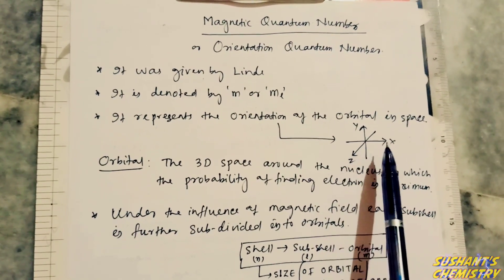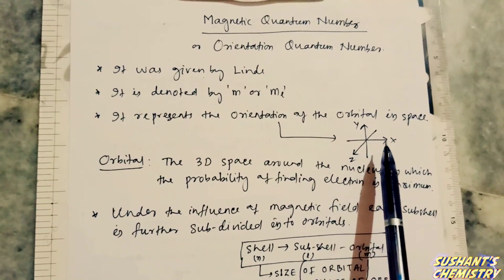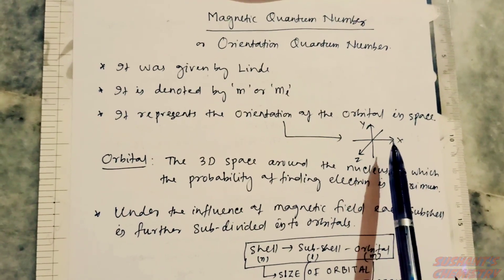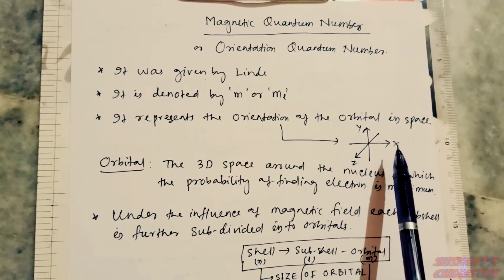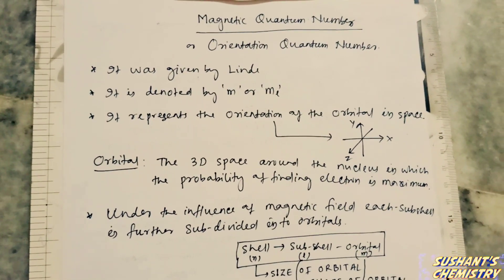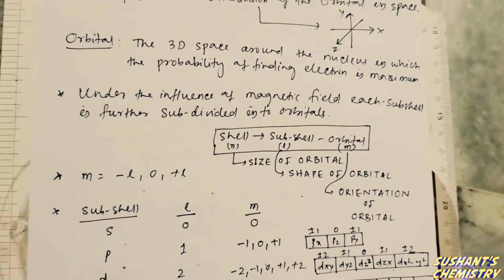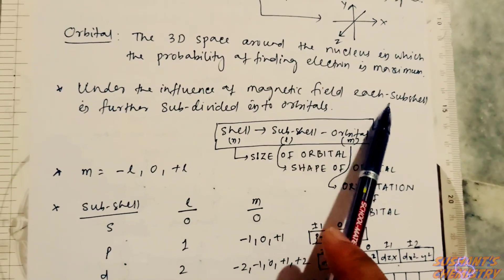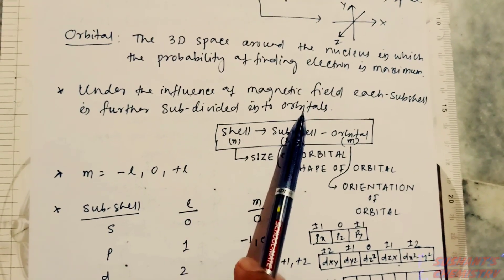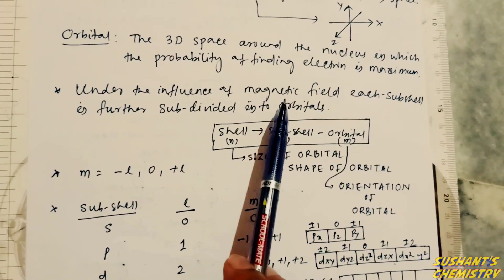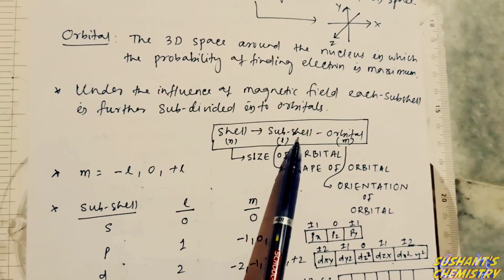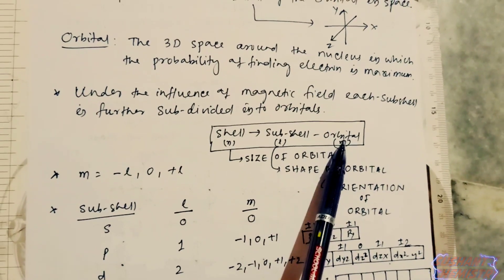Orientation means the direction of different orbitals along all three axes in 3D space. Under the influence of a magnetic field, a subshell is further subdivided into orbitals. That means in the presence of a magnetic field, the subshell is further divided into orbitals.